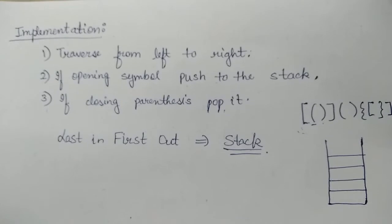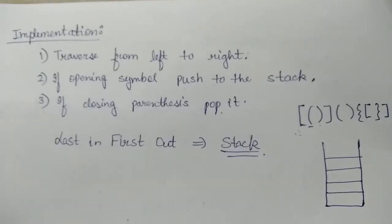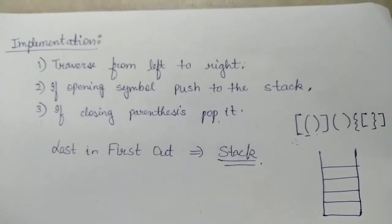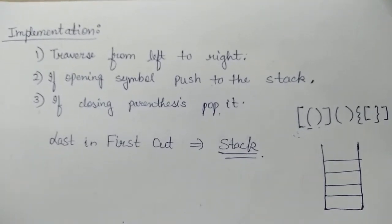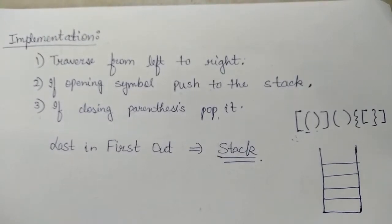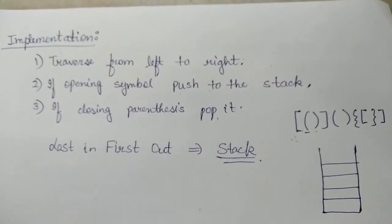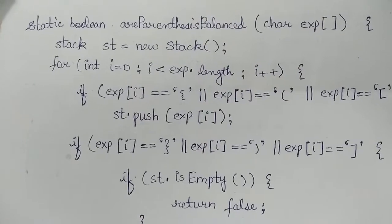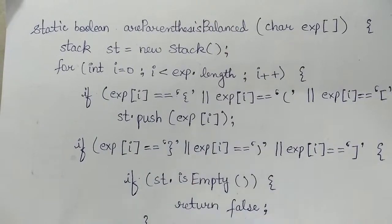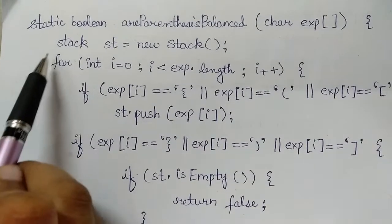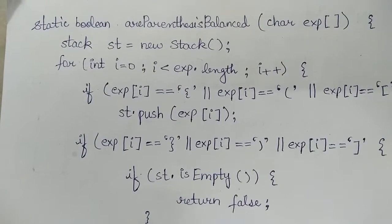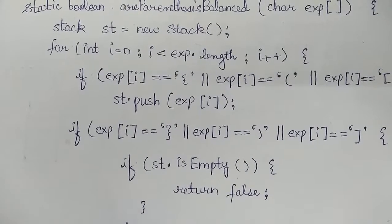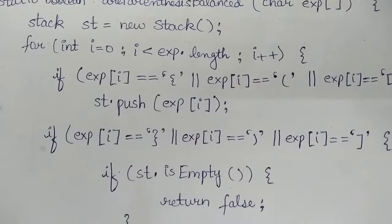Now we can build an algorithm from the concepts understood so far. The first step is that we will traverse from left to right, and whenever an opening symbol is encountered we will push it onto the stack, and whenever a closing parenthesis comes we will pop it. We are always inserting and removing elements from the same end of the list, which is Last In First Out — hence we use a stack. Going deeper into the algorithm, we define a function called 'is parenthesis balanced' which accepts the expression as a character argument. We form a stack to take input from the expression and use a for loop to iterate through the entire expression. Whenever we encounter an opening parenthesis, we push it onto the stack.